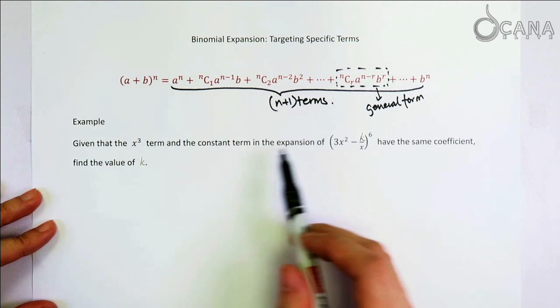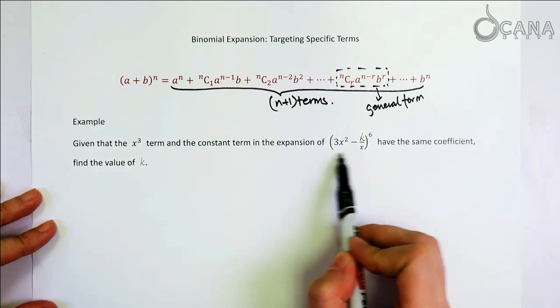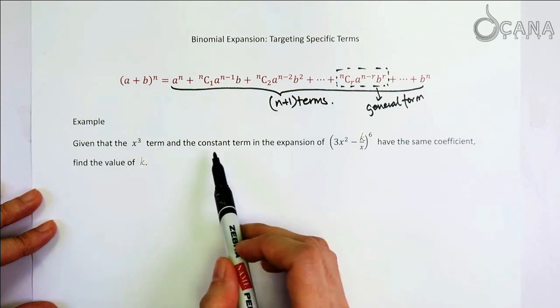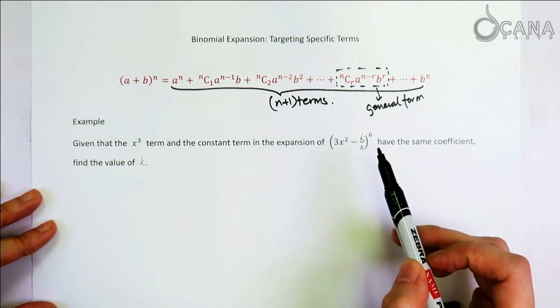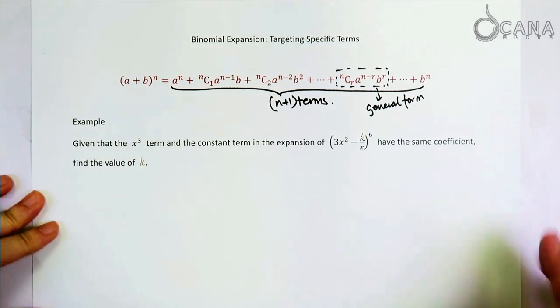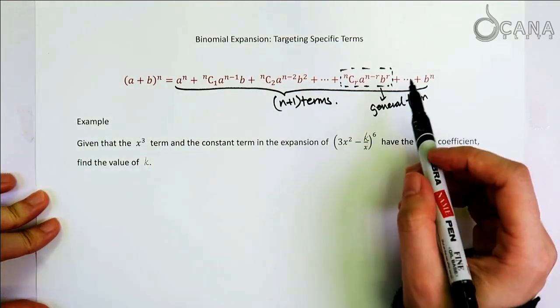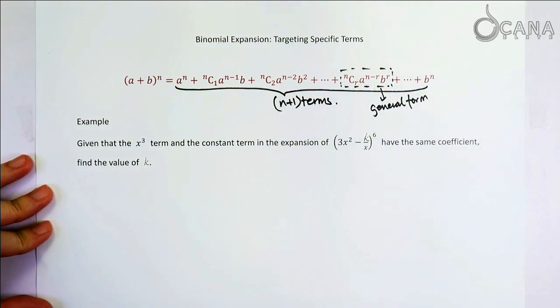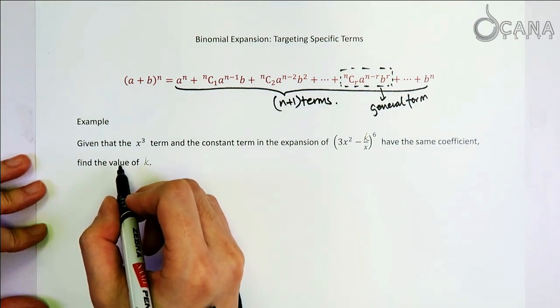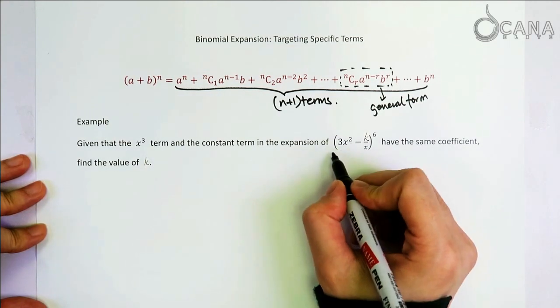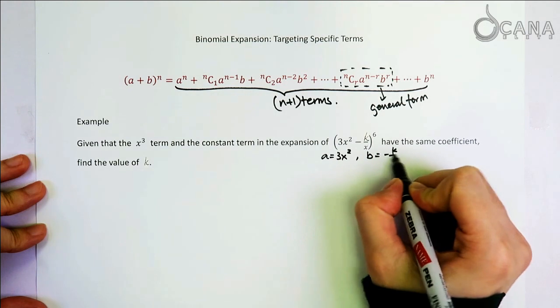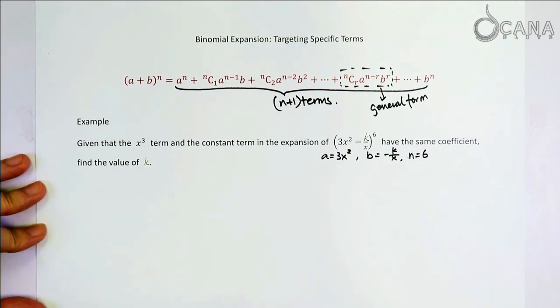In this question, we're given this bracket, and we're also told that the coefficient of the x cubed term and the constant term, they are the same. So the question asks us to find the value of k. So how are we going to apply this general form here to solve this question? Let's first of all recognize that in this question, a is 3x squared and b is negative k over x, n is 6.